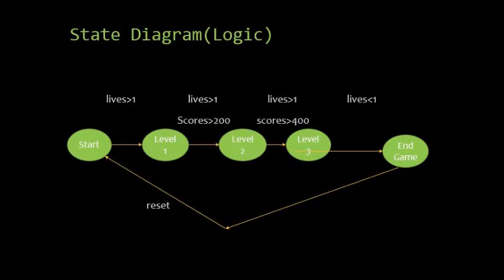We kept it according to the scores. So whenever scores go to a specific point the level transition occurs, and there is a reset state. So whenever there is a game over we can start the game again by pressing the reset key.